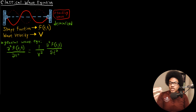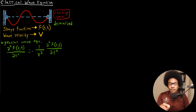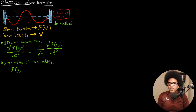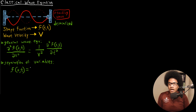This is just the general wave equation from classical mechanics. In order to solve equations like this, we use a technique known as separation of variables. We use this because we have a shape function that is a function of both position and time. With separation of variables, we assume that the two-variable function can be broken up into a product of single-variable functions — one function for position and one function for time.